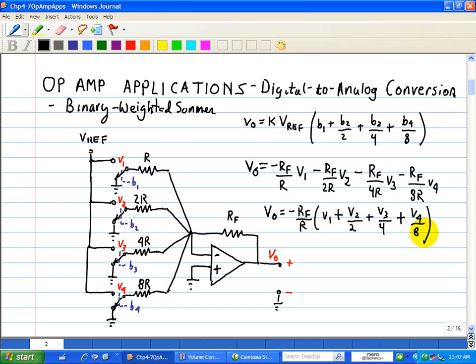Now, the input voltages are determined by switches, and in this case, is controlled by the input bits B1, B2, B3, and B4, shown here.